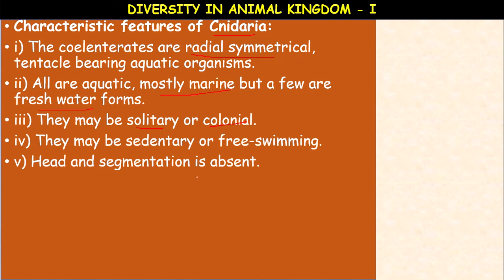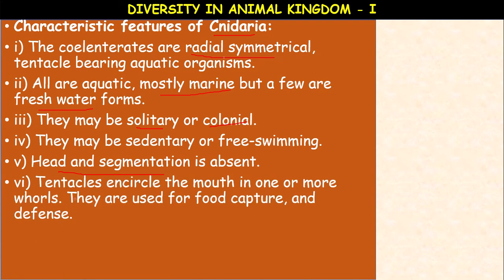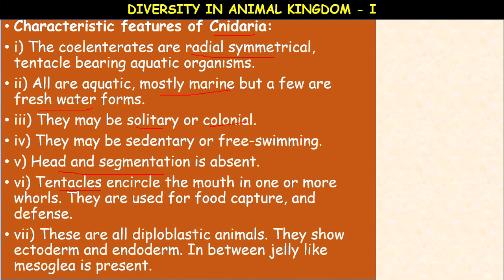Head and body segmentation is absent in cnidarians. Tentacles encircle the mouth in one or more whorls — like petals of a flower — and are used for food capture and defense. These are all diploblastic animals — the cells arranged in two embryonic layers: ectoderm and endoderm. In between the ectoderm and endoderm, a jelly-like mesoglea is present — mesoglea is the tissue present between the ectoderm and endoderm.